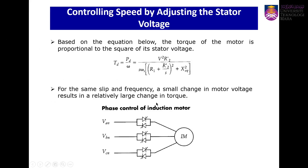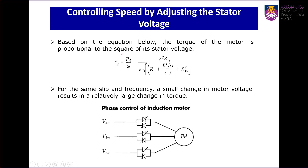Based on the equation, the torque of the motor is proportional to the square of its stator voltage. We can clearly see that if we can change the voltage, we can also change the torque as well as the speed. For the same speed and frequency, a small change in motor voltage results in a relatively large change in torque.